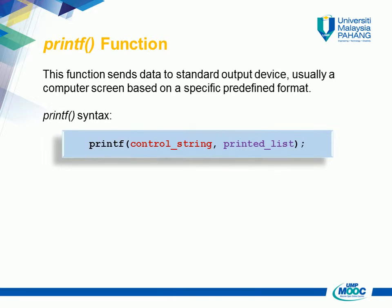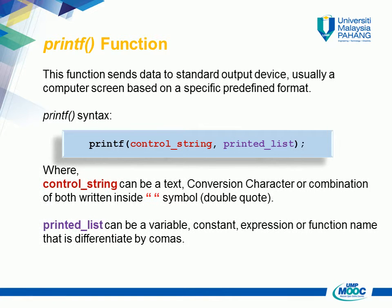Printf Syntax: printf(control_string, print_list). Where control_string can be a text, conversion character, or combination of both written inside double quotes. The print_list can be a variable, constant, expression, or function name, differentiated by commas.